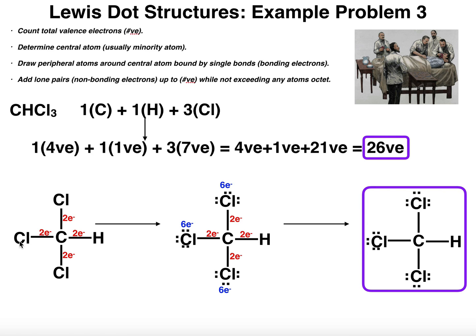Again it doesn't matter, I could have put the hydrogen anywhere. As long as each one is surrounding the central carbon, and I remember that each of these bonds represents two bonding electrons. So each bond is two electrons, that's a total of eight because there are four bonds. I need a total of 26 valence electrons, and I've already used eight of them.